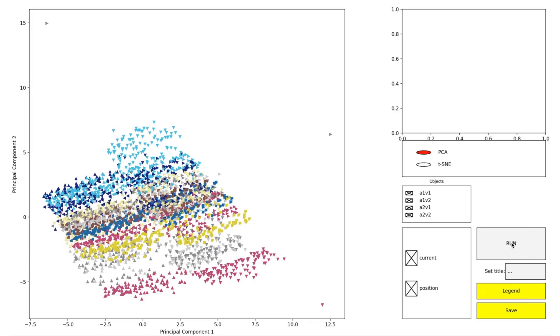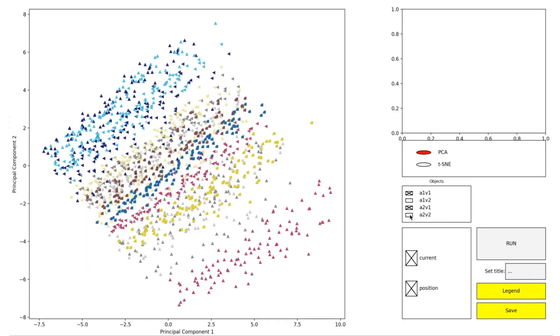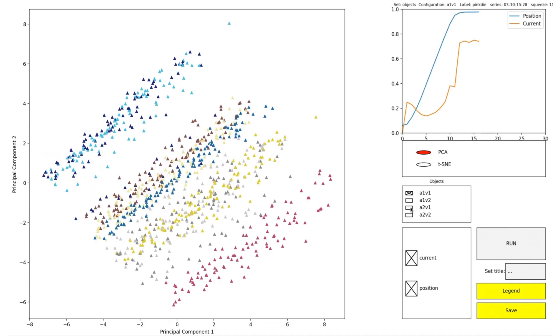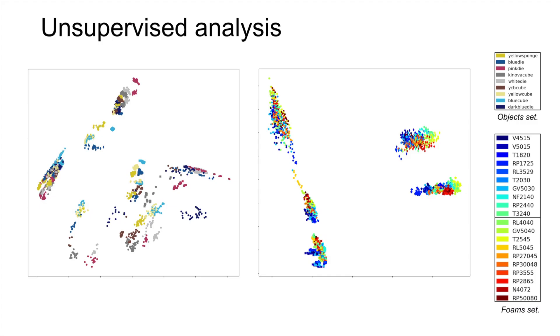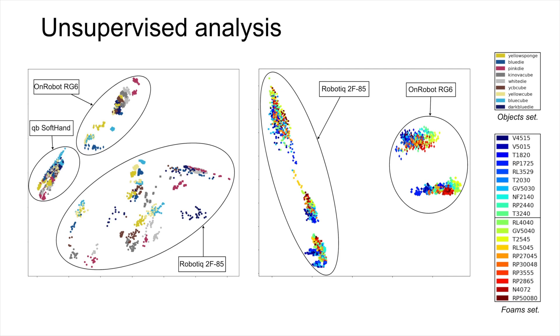To identify the dominant sources of variability in the sensory data - the gripper used, its action parameters, or the object grasped - we developed an interactive tool that allows users to explore various sensor and action configurations and visualize them using PCA or TSNE. Overall, the morphology, or embodiment of the devices, is the primary source of variability.